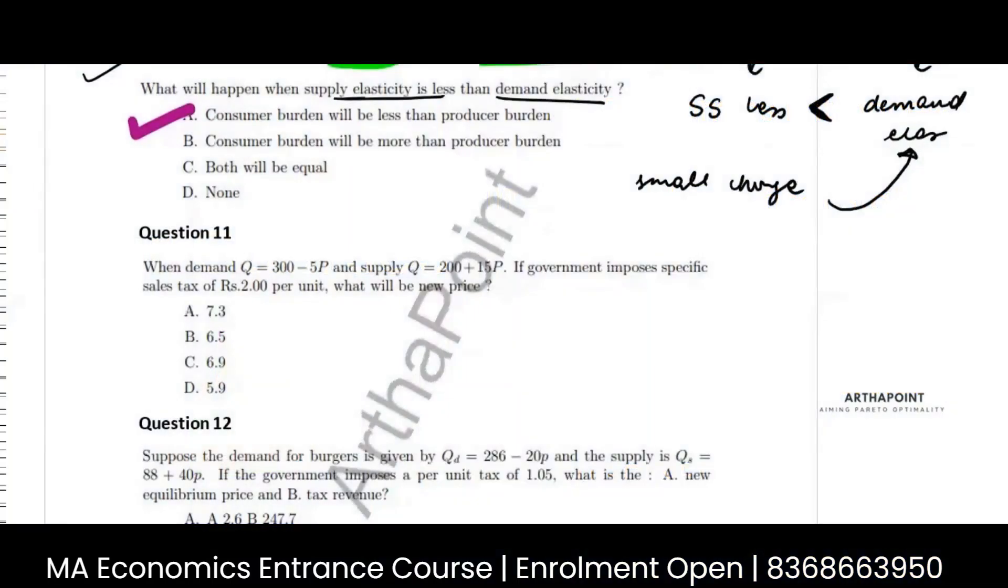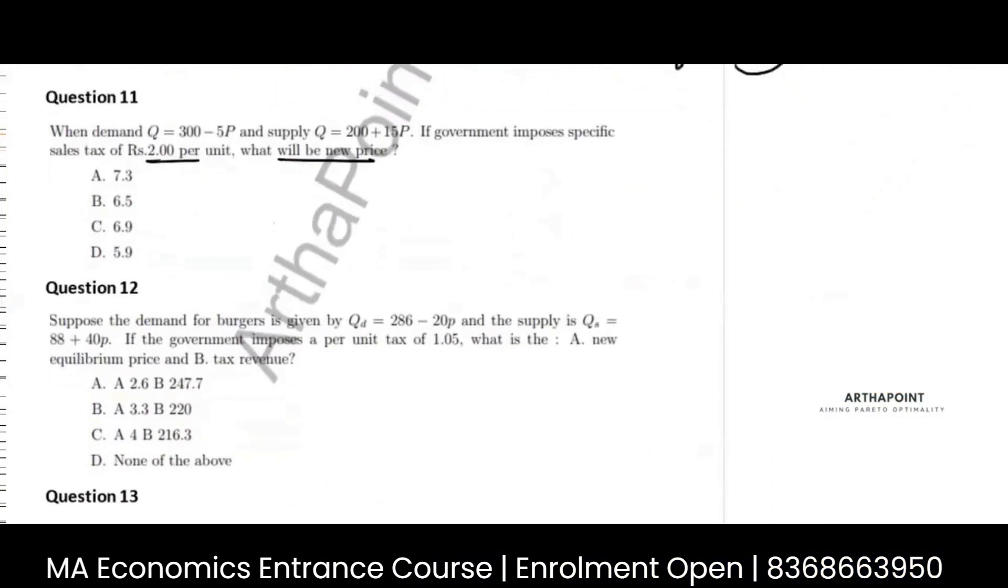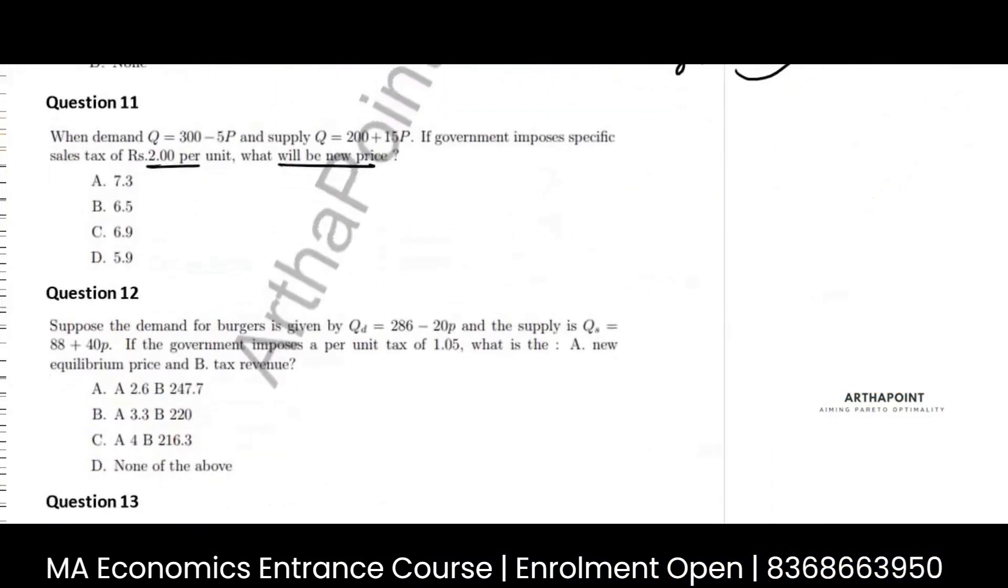When demand is this and supply is this, if government imposes specific tax, what will be the new price? There are two ways to solve it. I will solve a few questions by method one and a few by method two.